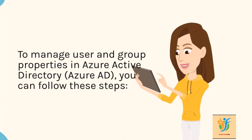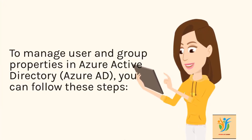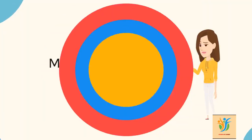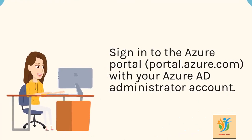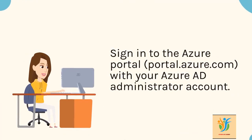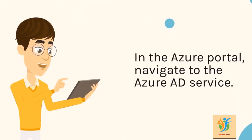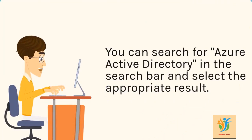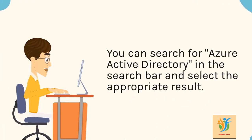To manage user and group properties in Azure Active Directory (Azure AD), you can follow these steps. Sign into the Azure portal at portal.azure.com with your Azure AD administrator account. In the Azure portal, navigate to the Azure AD service — you can search for Azure Active Directory in the search bar and select the appropriate result.